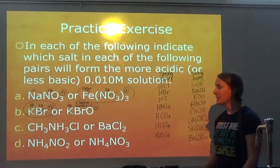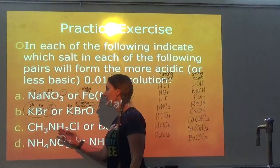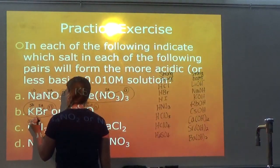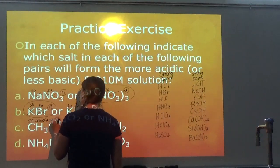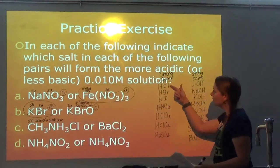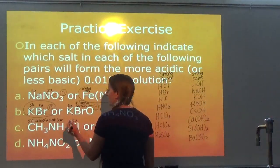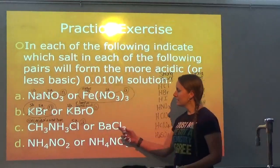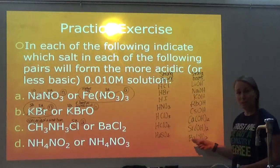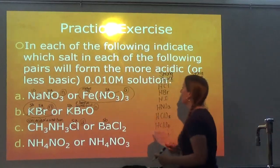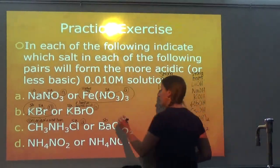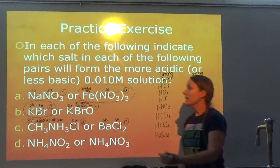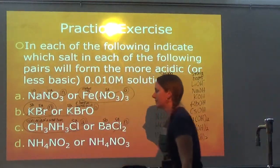For Part C, comparing CH₃NH₃Cl and BaCl₂: CH₃NH₃⁺ is not from a strong base, so it is the conjugate acid of a weak base — that solution is acidic. For BaCl₂, Ba is from a strong base so it does not affect the pH, and Cl⁻ is from a strong acid so it also does not affect pH — BaCl₂ is neutral. The more acidic one is obviously the acidic solution, CH₃NH₃Cl.